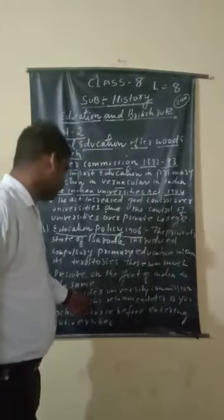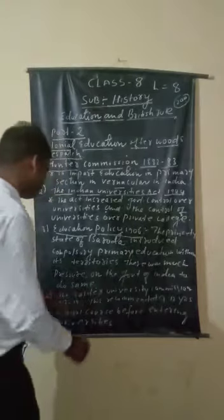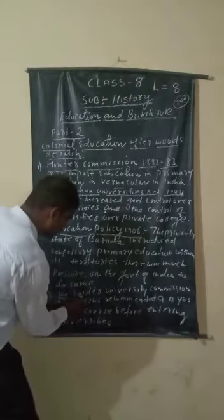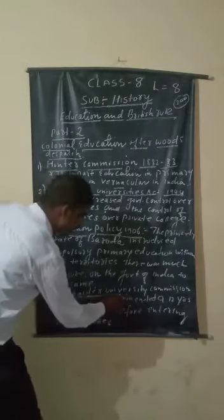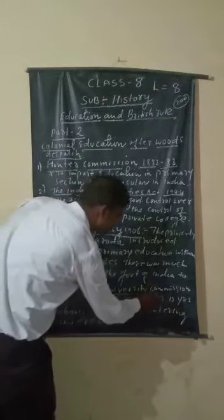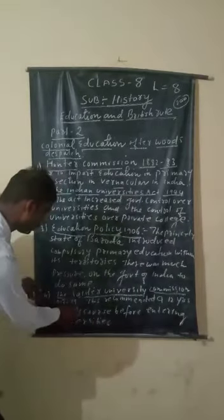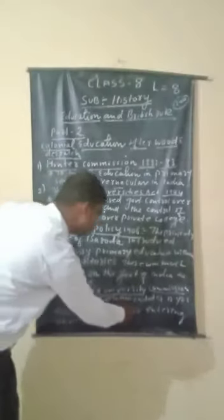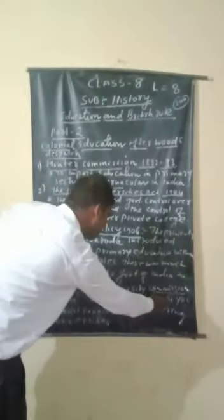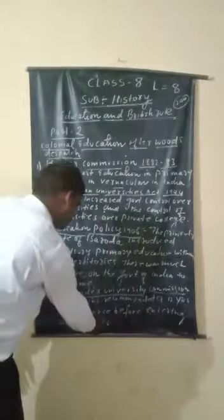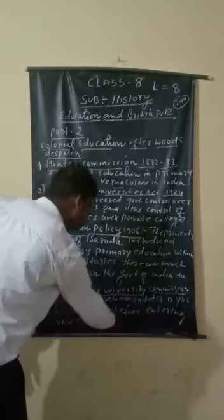Fourth: the Saddler University Commission was formed in 1917. This commission recommended a 12-year school course before entering the university.